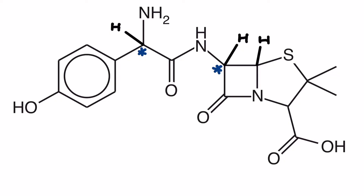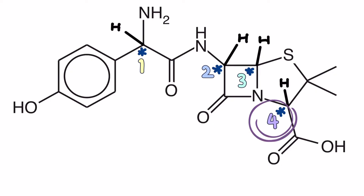By going through the structure from left to right and drawing out the chiral centres as and when I've found them, I've deduced that there are four chiral centres, which I've labelled up on screen.